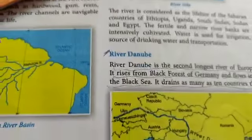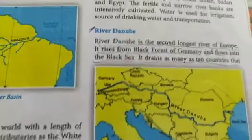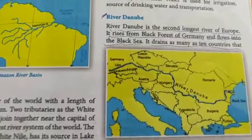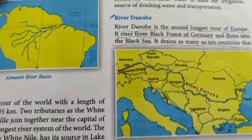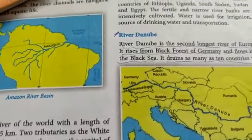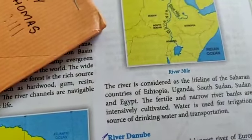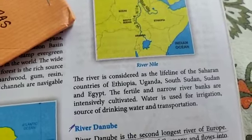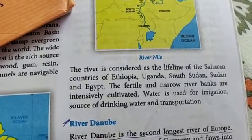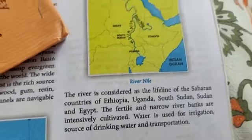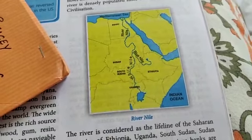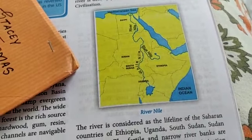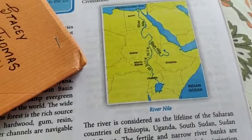Good morning once again class. Today we start learning about River Danube. In the last class we learned about River Nile and how its two major tributaries, the White Nile and the Blue Nile, come together at the capital of Sudan and from there they become one single river known as River Nile.